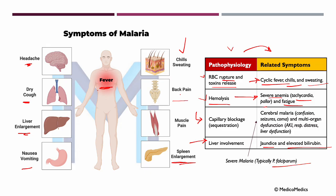With liver involvement, we expect jaundice and elevated bilirubin. With capillary blockage in more severe malaria, typically by plasmodium falciparum, we can see cerebral malaria — so confusion, seizures, or coma — and multi-organ dysfunction, like acute kidney injury, respiratory distress, or liver dysfunction.